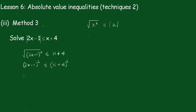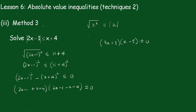That becomes 2x minus 1 all squared minus x plus 4 all squared is less than or equal to 0, and that's the difference of two squares. So it'll be 2x minus 1 plus x plus 4 times 2x minus 1, now watch this, minus x minus 4, less than or equal to 0. So this becomes 3x plus 3 and this becomes x minus 5, less than or equal to 0. Take the 3 out: x plus 1 times x minus 5.